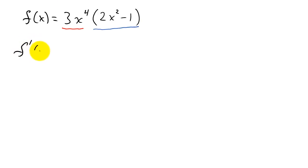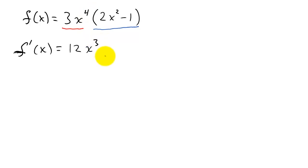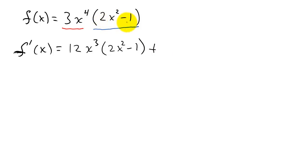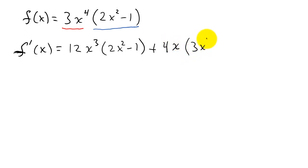Taking the derivative, we apply the product rule. The derivative of the first function: using the power rule, the 4 comes down, so 4 times 3 is 12, and subtract 1 from the exponent gives 12x cubed. That's times the second function, 2x squared minus 1. Plus the derivative of the second function: bring the 2 down, so 2 times 2 is 4, subtract 1 from the exponent gives 4x. The derivative of minus 1 is 0, so that's times the first function.